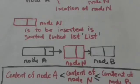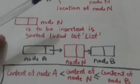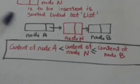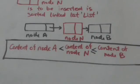If node N is to be inserted in a sorted linked list, then node N is inserted between nodes A and B such that the content of node A is less than the content of node N, and the content of node N is less than or equal to the content of node B. Here it is assumed that the linked list is sorted in increasing order.